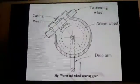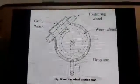The next type of steering gear is the worm and nut steering gear. In this type, a ball nut is connected to the worm, and the worm is connected to the steering wheel so the driver can operate it. The ball nut is connected to the drop arm through a cross shaft, and the entire assembly is contained in a casing.